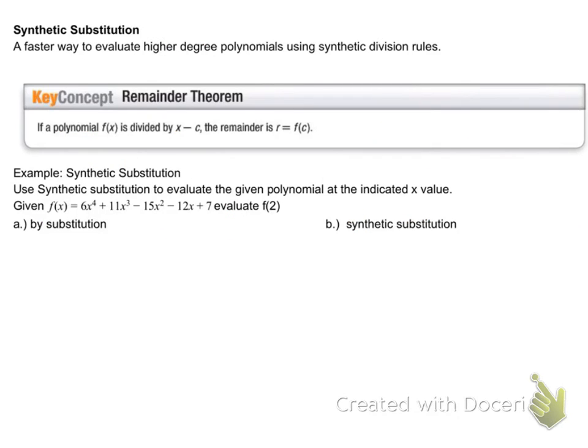Now, what if I said that you guys could shorten up some of your evaluating functions? So, here's a cool thing, is that synthetic substitution is a faster way to evaluate higher degree polynomials. And all I'm using is synthetic division rules. It seems a little complicated when you read this at first. It says that if a polynomial f of x is divided by x minus c, which we just did in the last two problems, the remainder r is the value of the function at c.